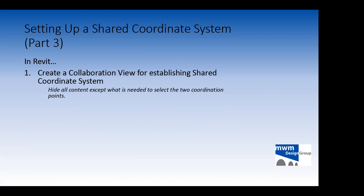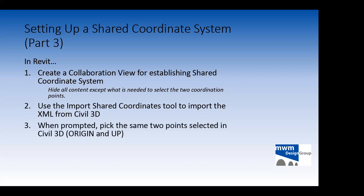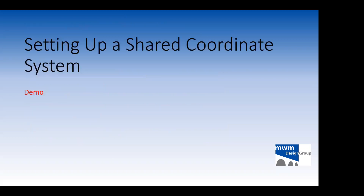In part three, we go back into Revit and create a collaboration view for establishing the shared coordinate system. In my case, I'm using grid lines for my two points, so I hide everything except the grid lines — I call it the grid view. Then I use the Import Shared Coordinate tool within Revit to import the XML created by Civil 3D. It prompts me to pick the same two points I picked in Civil 3D: the origin point and what's called the 'up' or quasi-north direction. Finally — and this is the step I often forget — you must set the imported shared coordinate system as current.